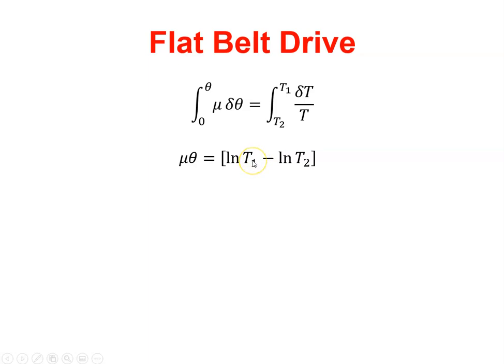And then I put in the T1 and the T2. And from the law of logs, natural log of T1 minus natural log T2 is the same as the natural log of T1 over T2. And then if I get the antilog of both sides, T1 over T2 is equal to E, Euler's number, E to the power of μ times θ. And that's how the equation is derived.